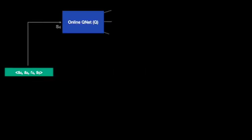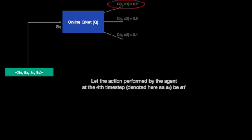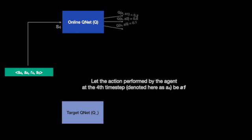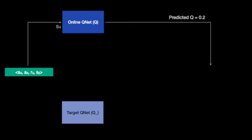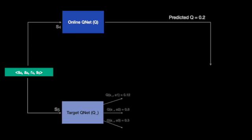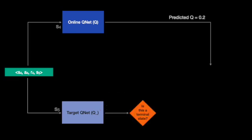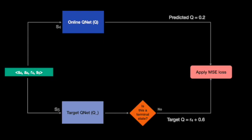For the predicted Q value, we use the state from the mini-batch as the input to the Q network and pick the Q value associated with the corresponding actions in the mini-batch. As for the target, we sum together the immediate reward as recorded by the mini-batch with the Q value of the next state and action pair. This is computed by using the next states from the mini-batch as the input to the target network and picking the highest Q values. We also need to check if S' was the terminal state of the episode. If the agent is in the terminal state, there are no future rewards, and so this term is set to zero. Finally, don't forget to update the target network after every C steps by copying over the weights of the online network.